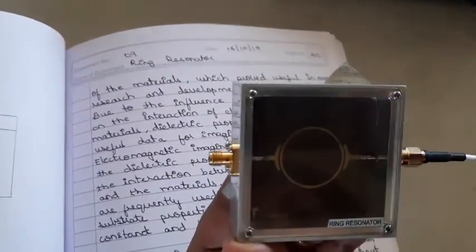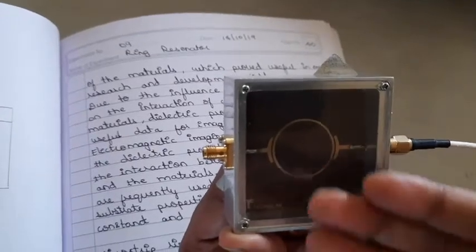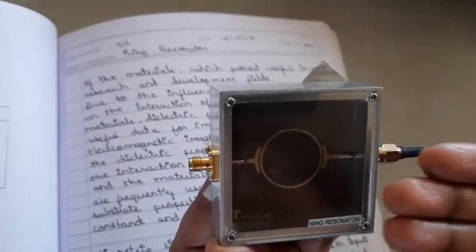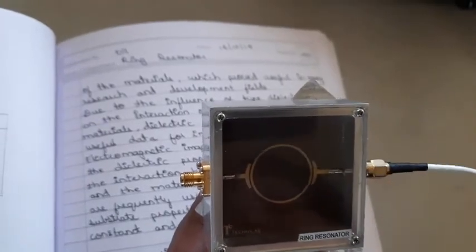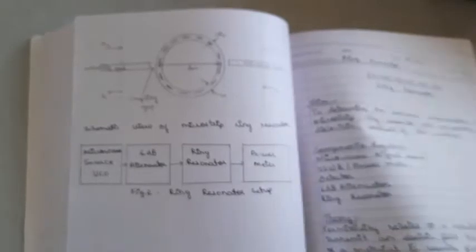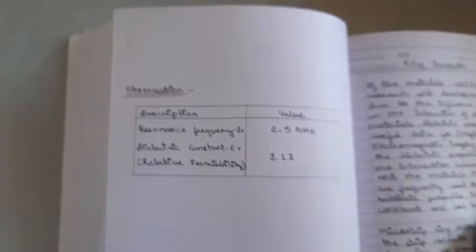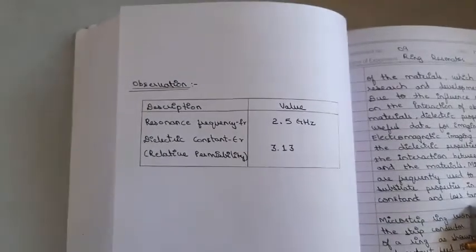This is the ring resonator — the conducting material is bent in the form of a ring. Below this ring resonator there is a substrate material which is made up of duroid, and we have to find the dielectric constant of that duroid material. Dielectric measurement is important because it can provide the electric and magnetic characteristics of the material, which proves useful in many research and development fields. In order to conduct any research on that particular material, we have to know the dielectric constant, which is helpful in measuring its electrical characteristics.